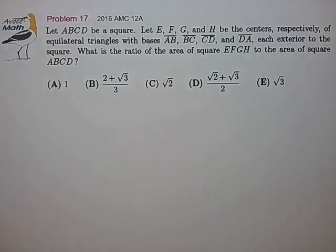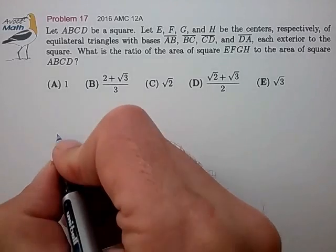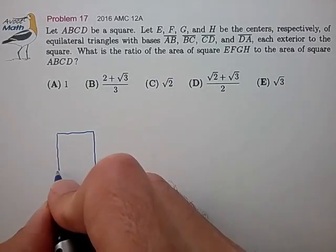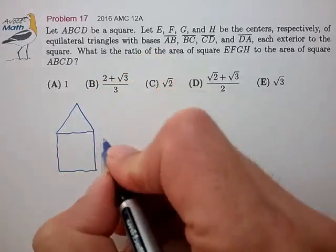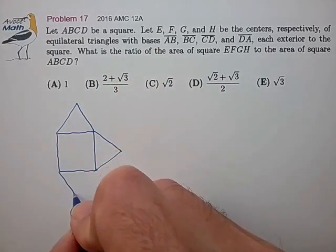So let's make a careful drawing here. I think that's probably going to help us in this problem. Let's draw our square ABCD. I'm going to draw four equilateral triangles off the sides.